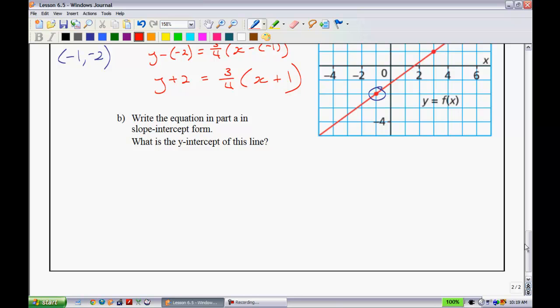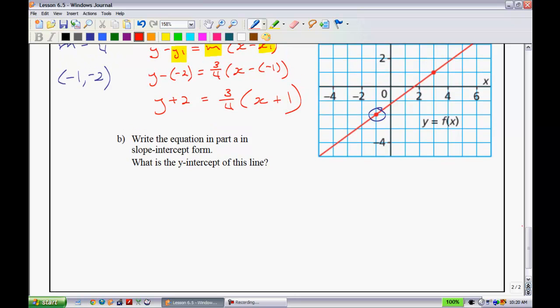B says write the equation in part A in slope-intercept form. What is the y-intercept of this line? Well, what they want you to do is they want you to take what we have right up here. And they want you to go and put that into y equals mx plus b. So in order to do this, what I want you to think of is I want to go and try to get y all by itself. So I'll write the equation the way we have it right here. y plus 2 is equal to 3 quarters onto x plus 1.